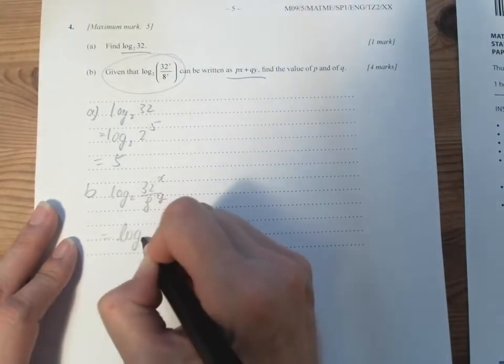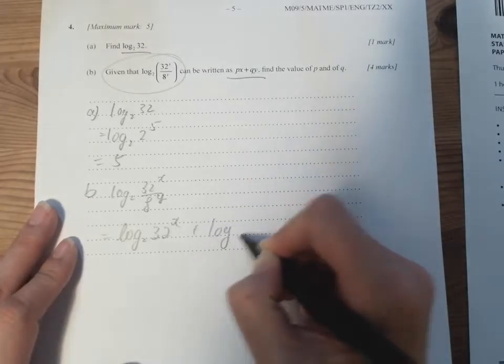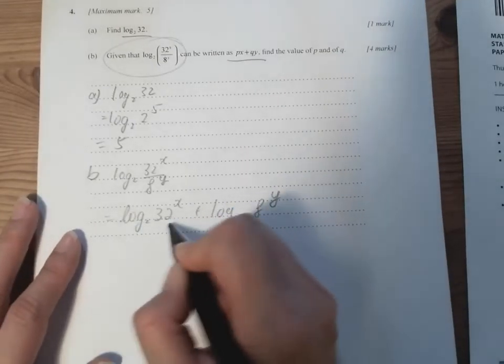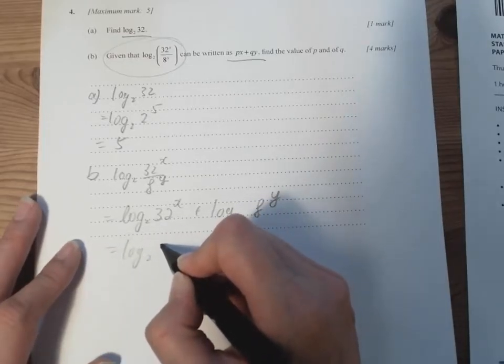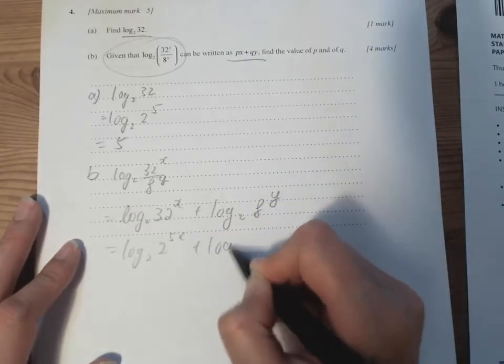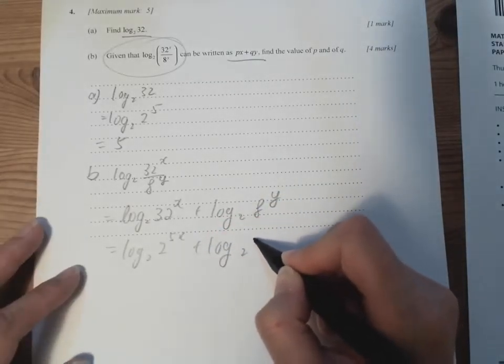So we have log 2, 32x plus log 2, 8 to the power of y. And then we have to change it into 2. So we have log 2, 2 to the 5x plus log 2, 2 to the power of 3y.